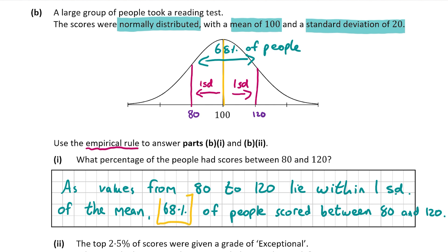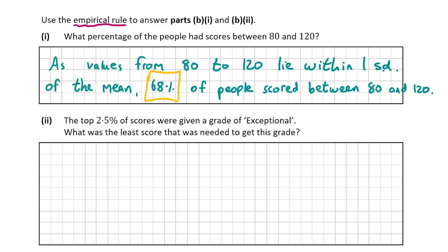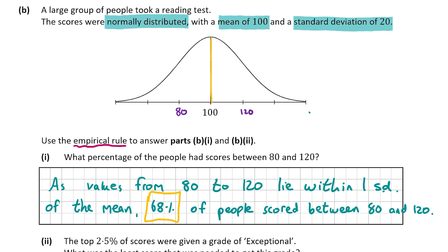The answer to B1 is 68%. Part B2 says that the top 2.5% of scores were given a grade of exceptional, and we have to work out the lowest score needed to get this grade. The empirical rule also says that within two standard deviations of the mean, 95% of all values will lie — so 95% of people lie within two standard deviations.